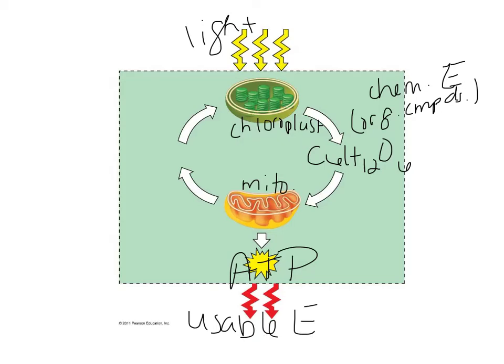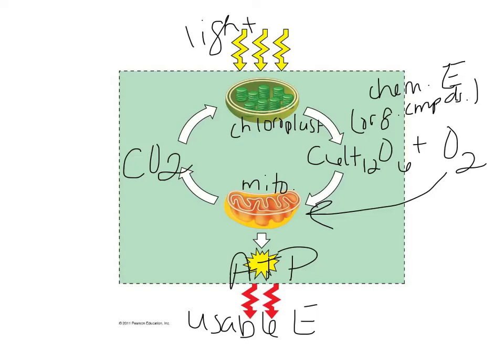As the mitochondria breaks down the organic compound into usable ATP, it releases CO2. Similarly, the chloroplast releases oxygen, which is required for cellular respiration. We cycle through the carbon going into the chloroplast and released from the mitochondria, as well as the oxygen released from the chloroplast and taken into the mitochondria.